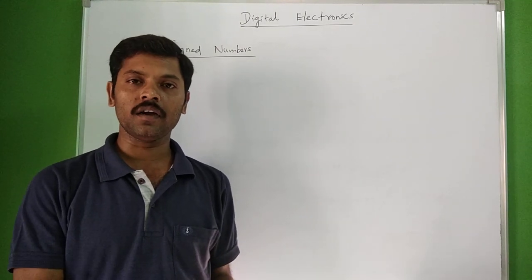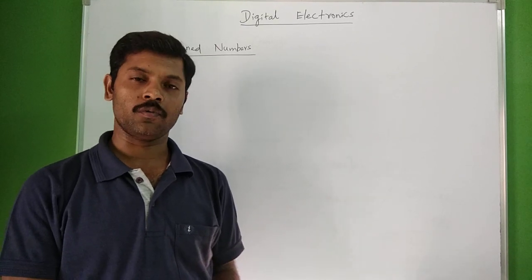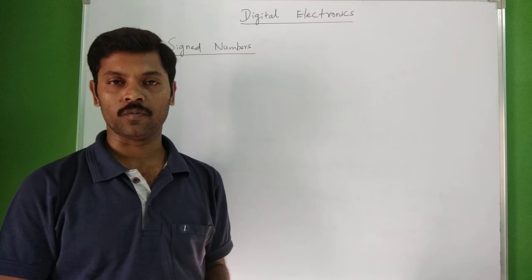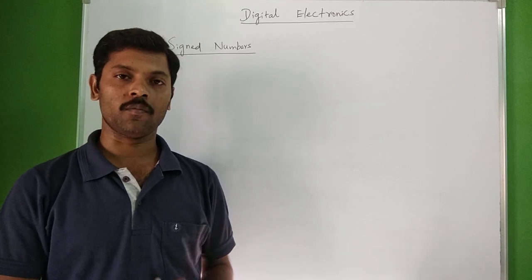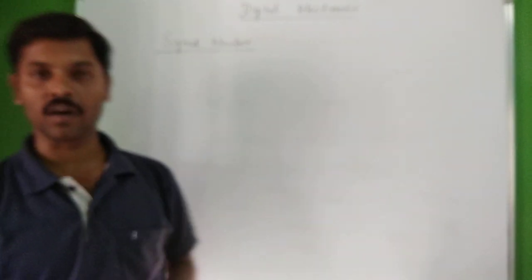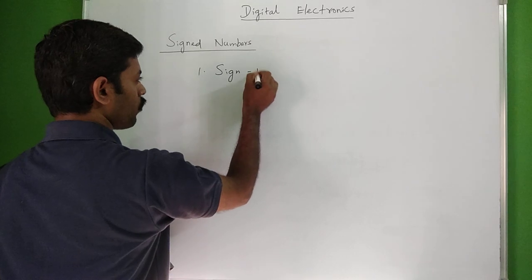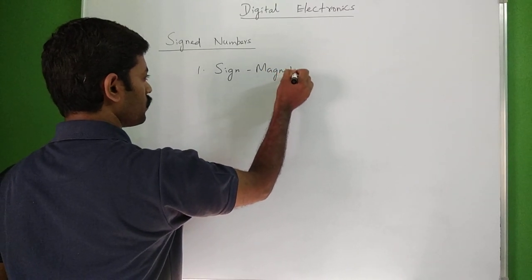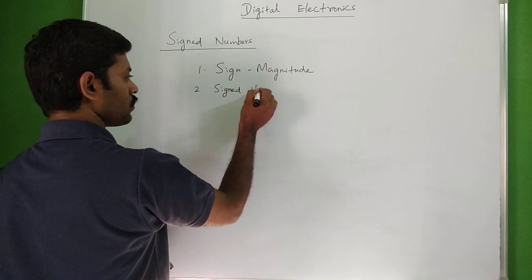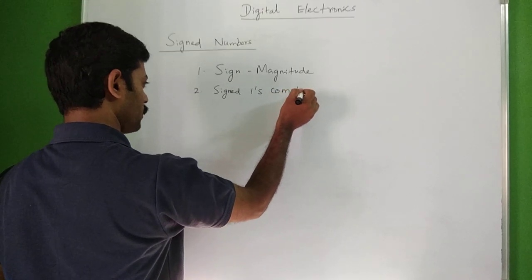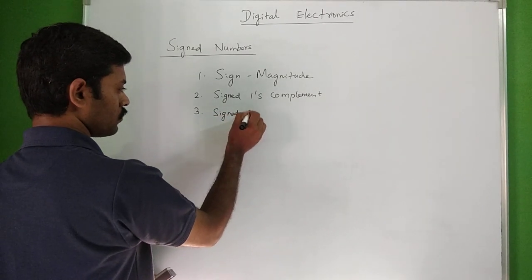In digital systems, sign numbers represent negative numbers. There are three sign representations: first, sign magnitude form; second, signed 1's complement; and third, signed 2's complement.